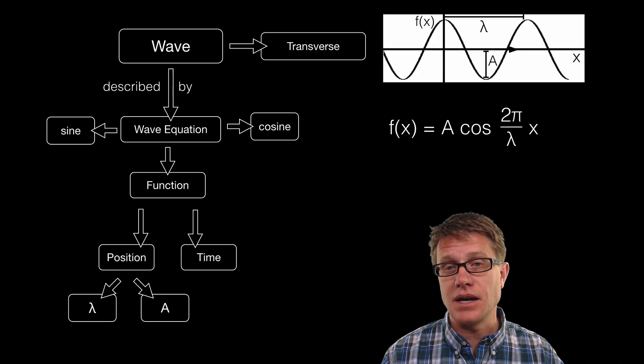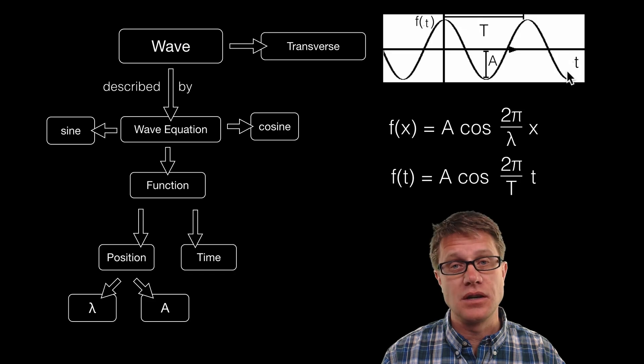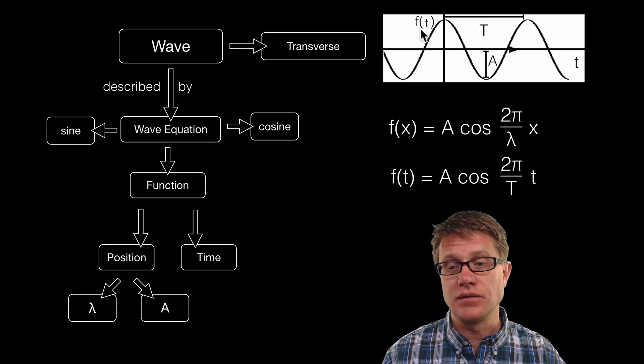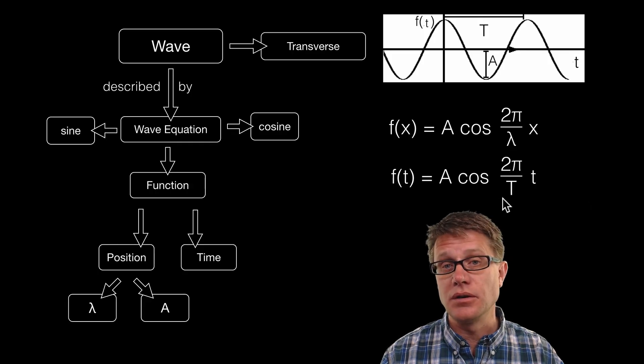But we could also use a function of time. So if I change that slightly, instead of having position here, we have time, and this is f of t. It is a similar equation. A is the amplitude, and now instead of having it over lambda we have it over T, which is going to be the period.